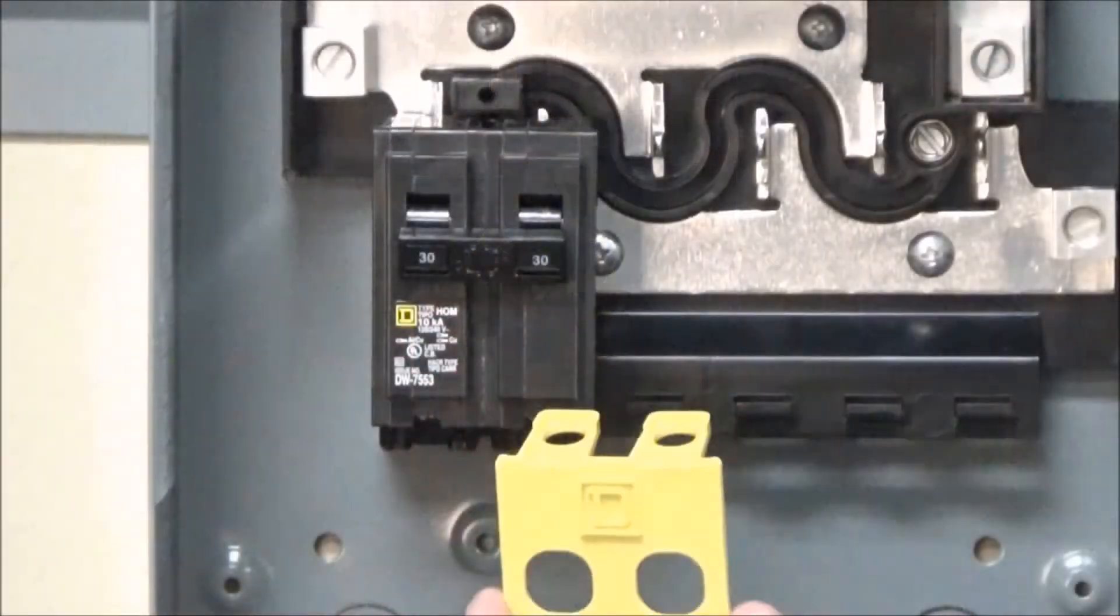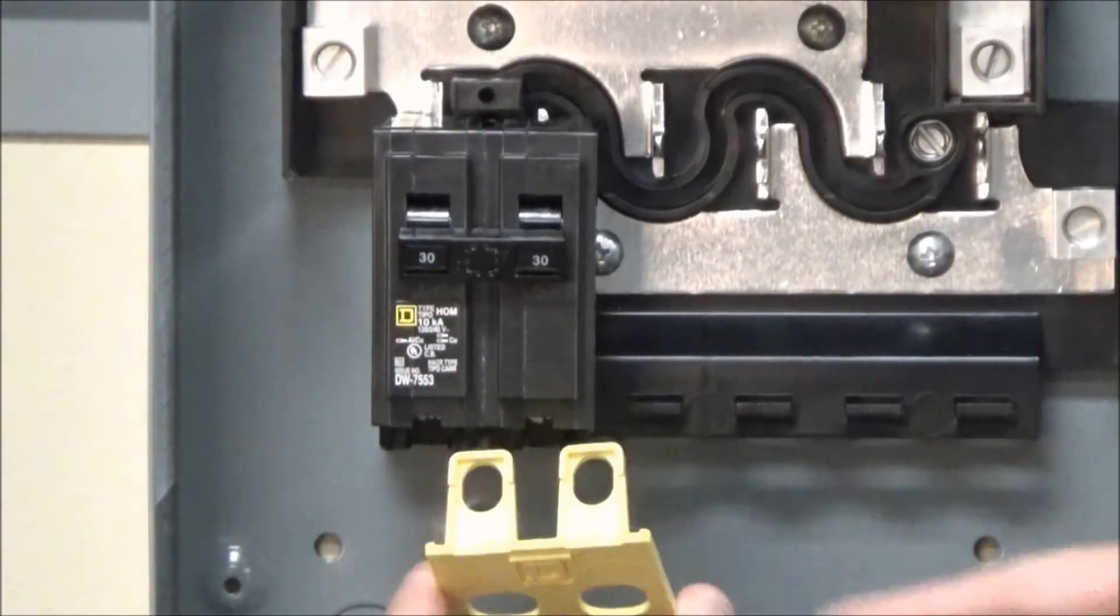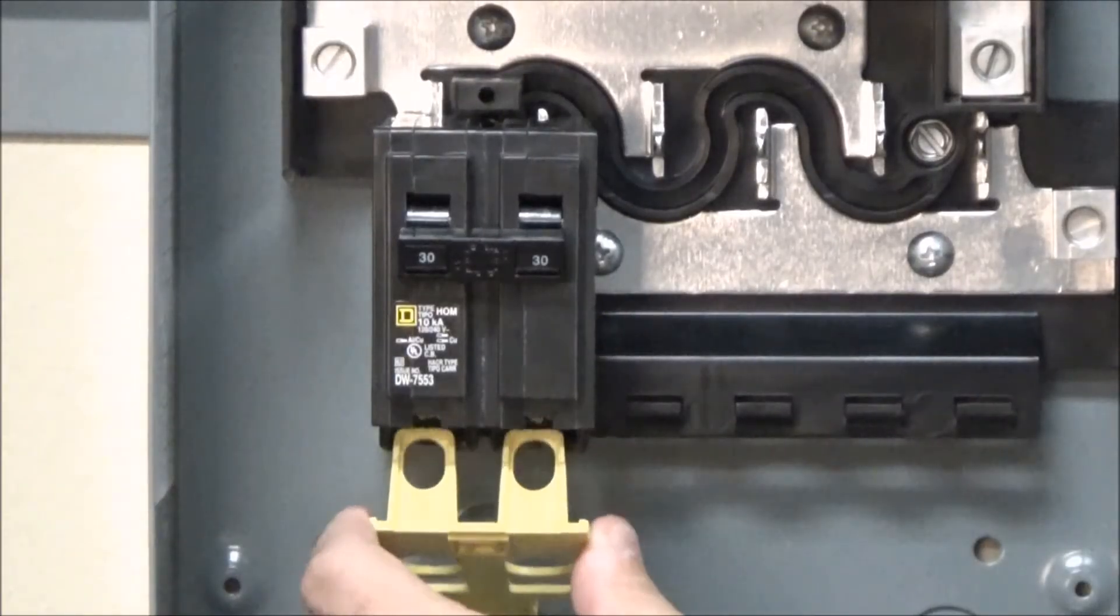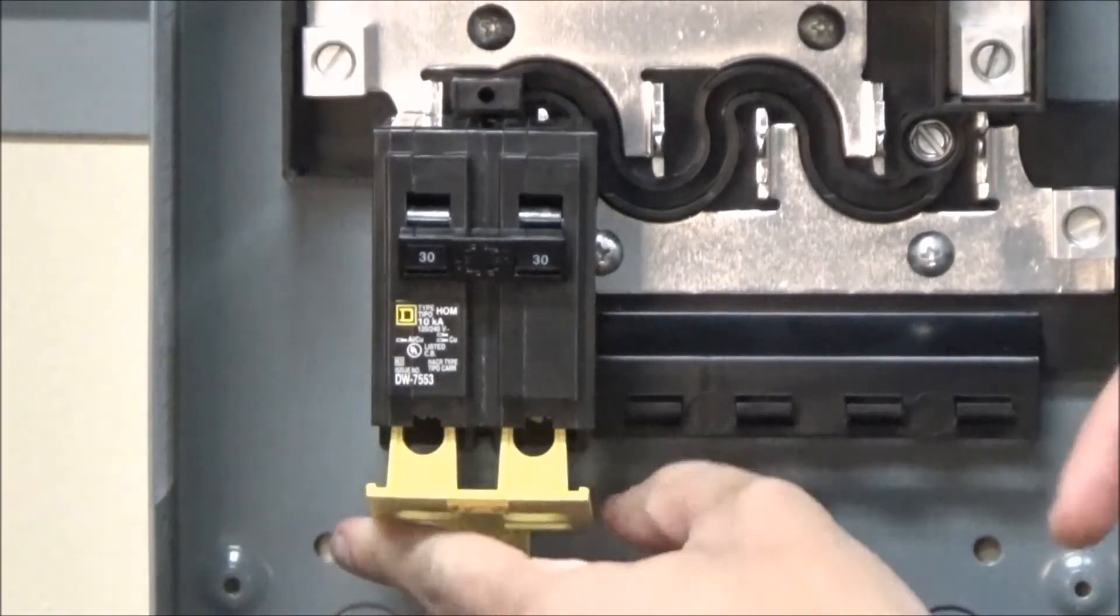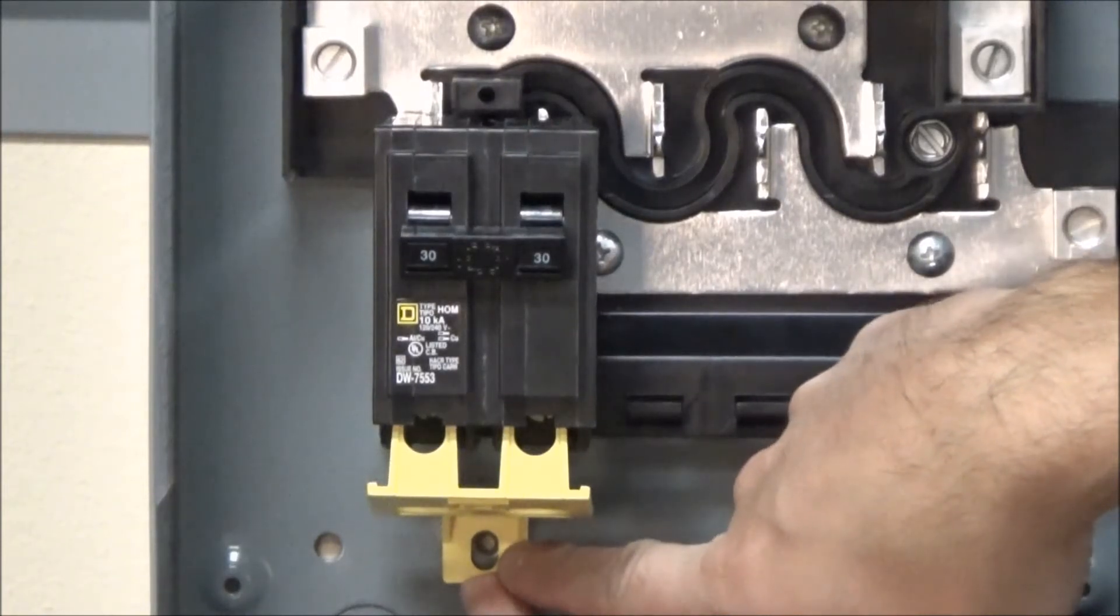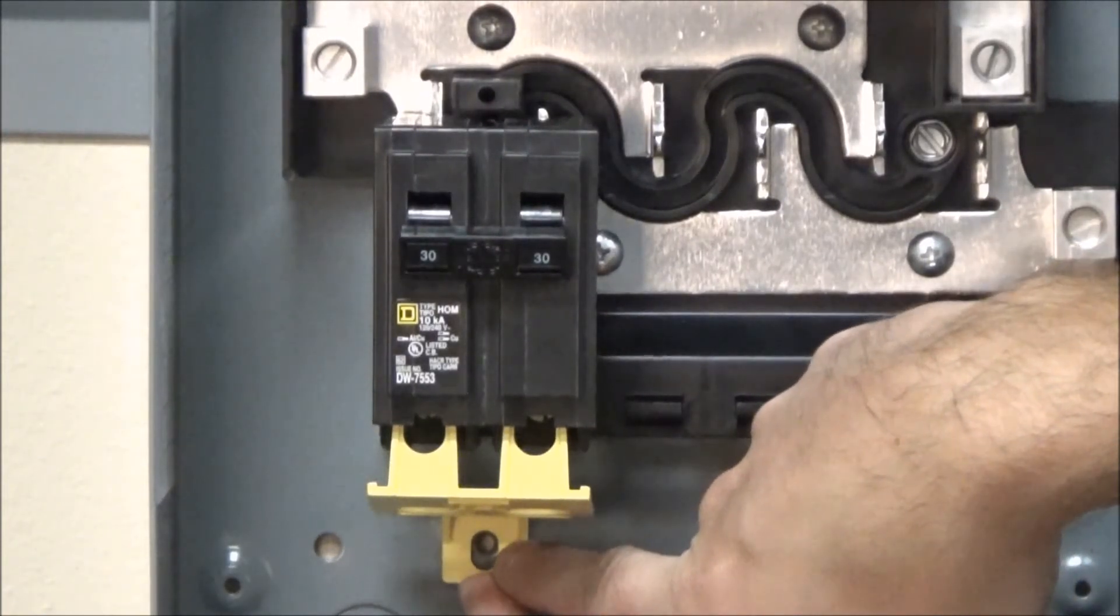To install the service entrance barrier, you will insert the tabs on the barrier into the circuit breaker slots, and then you will take the mounting screw and insert it into the extruded hole located on the enclosure, which is only on the new 2017 home line panels.